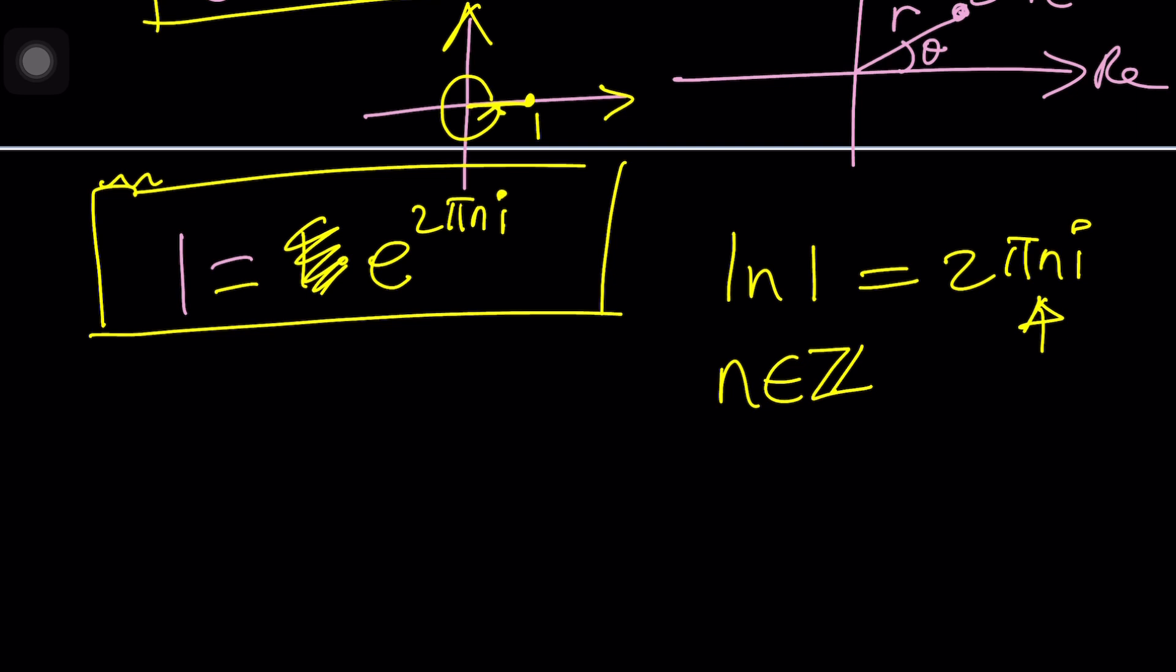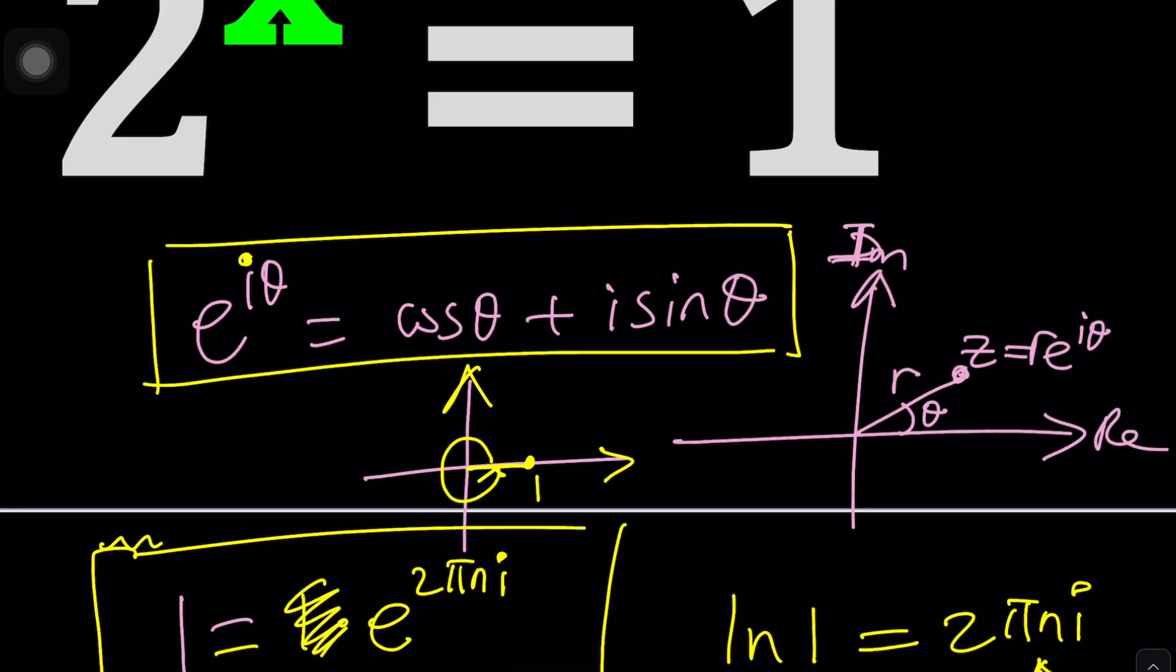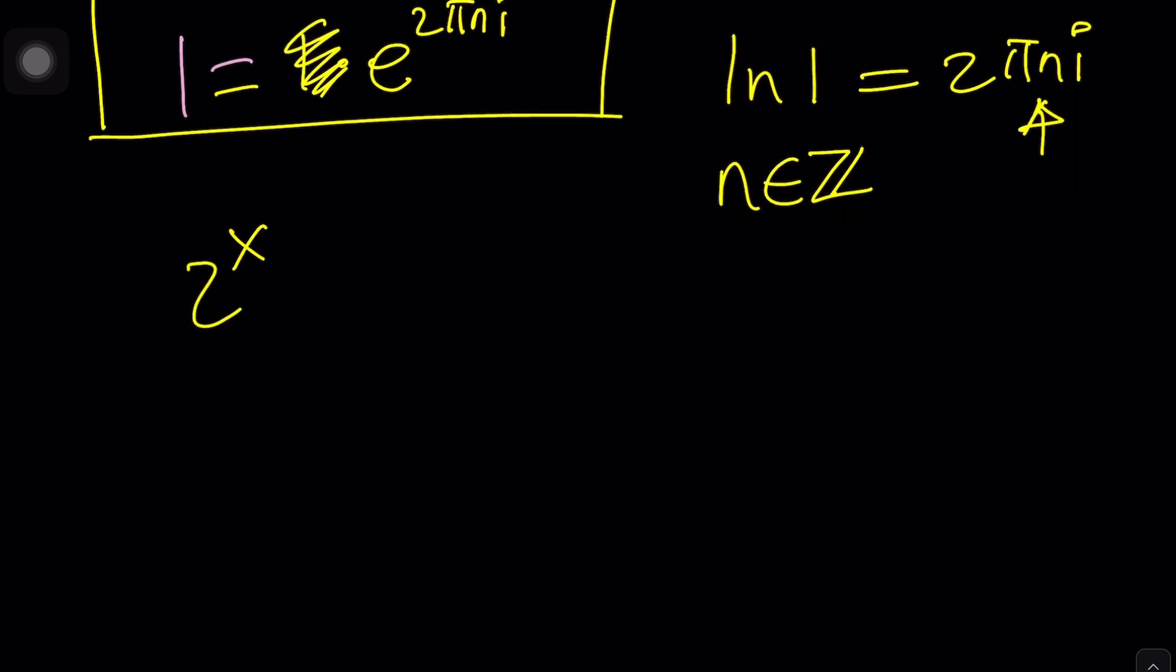Now, let's go ahead and see how we can use this fact to solve this problem. What do we have? 2 to the power x equals 1. Now, for 2, I'm going to write it as e to the power ln 2, and then just raise it to the power x, and this will be e to the power 2 pi n i.